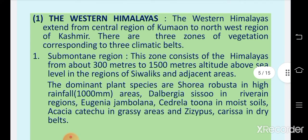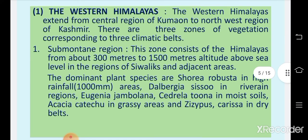Coming to the first region, western Himalayas. The western Himalayas extend from the central region of Kumaon to the northwest region of Kashmir. There are three zones of vegetation corresponding to three climatic belts: submountain, mountain, and alpine zones.